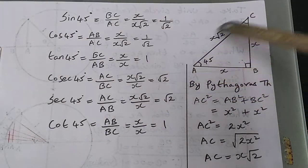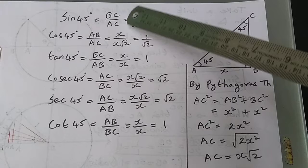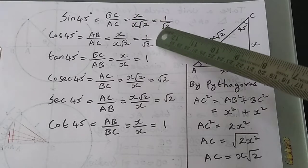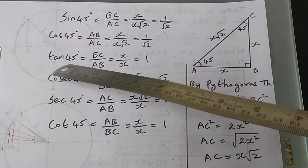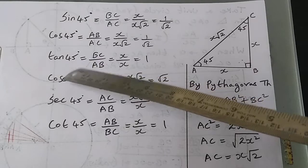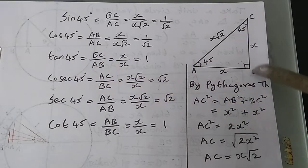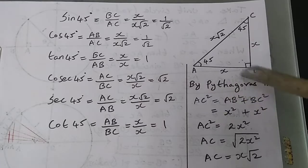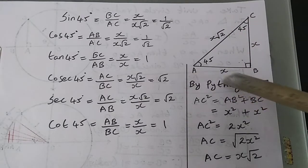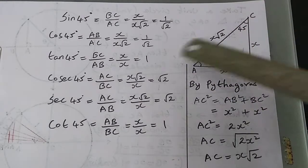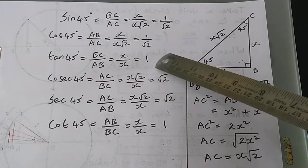Cos 45 = X/(X√2), the X's cancel, so cos 45 = 1/√2. Next, tan 45 is opposite by adjacent, so opposite is X and adjacent is also X, so X/X cancels and tan 45 = 1.